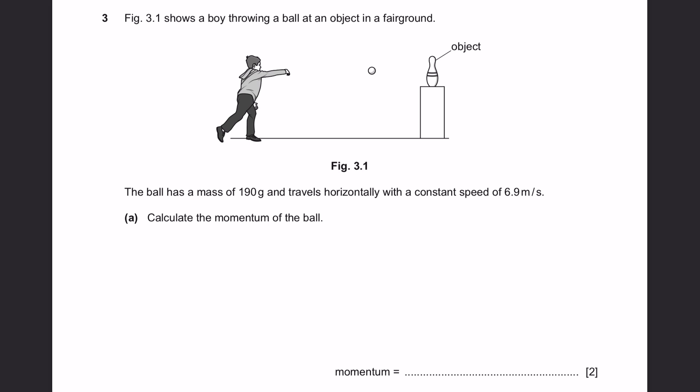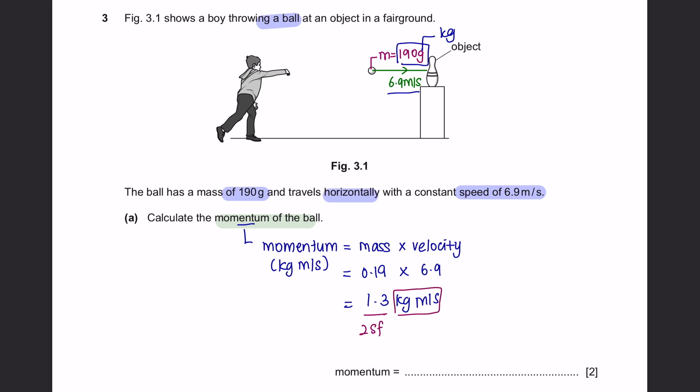Question 3. Figure 3.1 shows a boy throwing a ball at an object in a fairground. The ball has a mass of 190 grams and travels horizontally with a constant speed of 6.9 meters per second. Part A: Calculate the momentum of the ball. Momentum can be calculated by the equation of mass times velocity. This will give us a momentum of 1.3 kilograms meter per second. Your answer should be in two significant figures and do not forget your units.